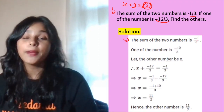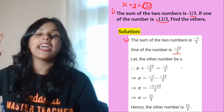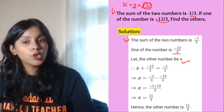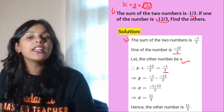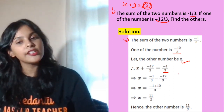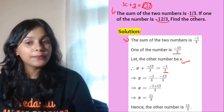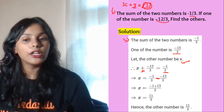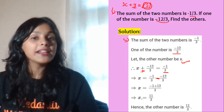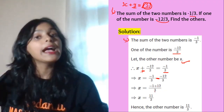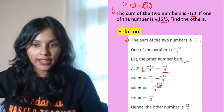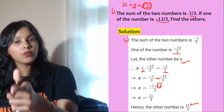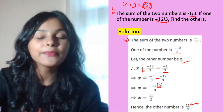The sum of two numbers is minus 1 by 3 and one number is minus 12 by 3. Let the other number be x. So x plus minus 12 by 3 equals minus 1 by 3. Transfer minus 12 by 3 to the RHS, so it becomes plus 12 by 3. Then x equals minus 1 plus 12 by 3, which equals 11 by 3. Since 12 is greater, the sign is positive, giving 11 by 3 as the answer.